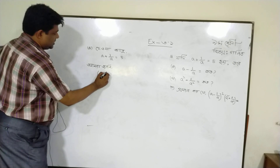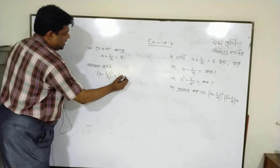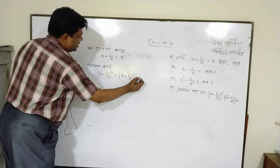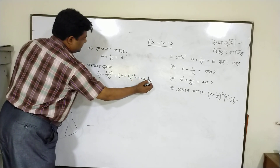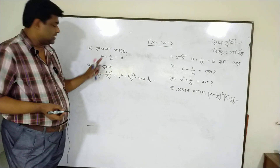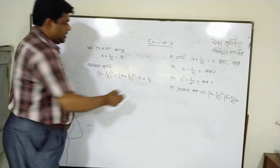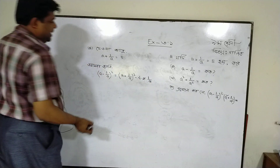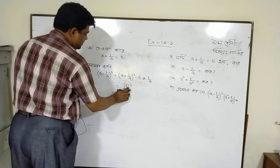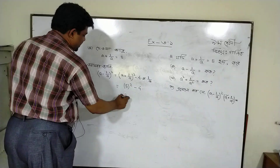We know: a minus b, whole square, minus 4b. We have 10. Here we see four. This brings us to four.